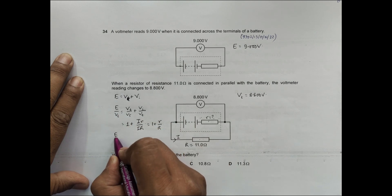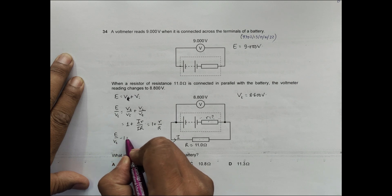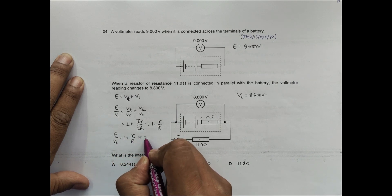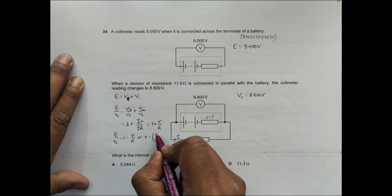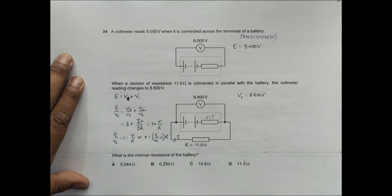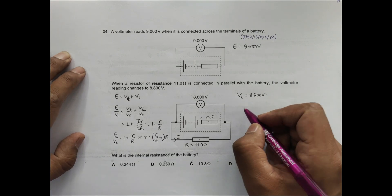So E by V_T minus 1 is equal to r by R, which gives us r is equal to E by V_T minus 1, then times R.